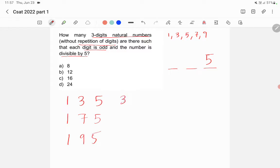Then we have 315, we have 375, we have 395, then we have 715, 735, 795, then we have 915, 935, and 975. So there are total 12 possibilities.